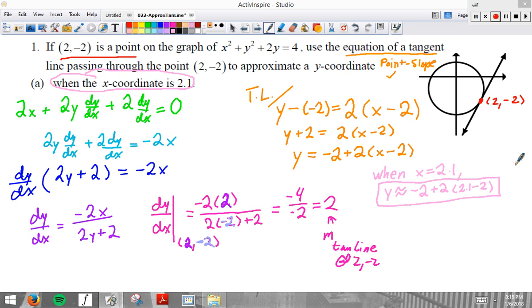That would be a perfect final answer. You don't need to simplify. If you choose to simplify, you would get Y is approximately negative 2 plus 2 times 0.1. Y is approximately negative 2 plus 0.2. Y is approximately negative 1.8.